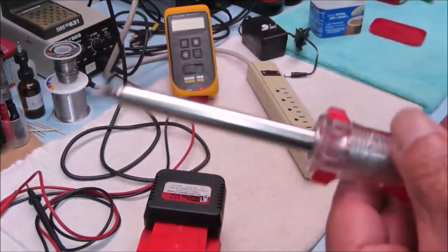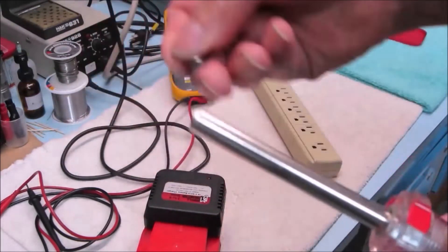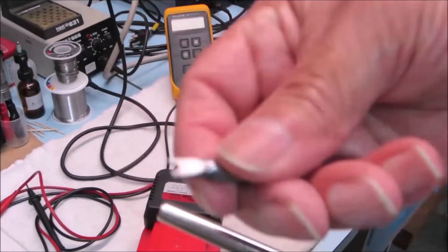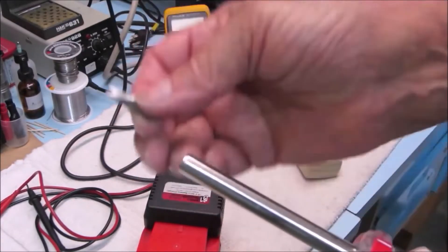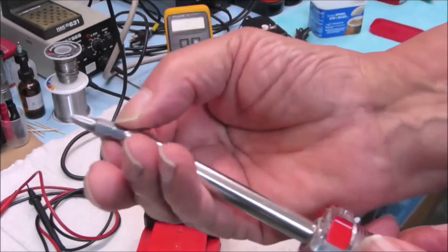The bits will go into a magnetic screwdriver like this. This particular one uses that type of bit. They come right out. You just need the right bit.